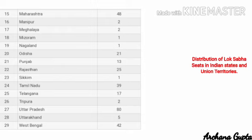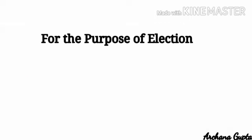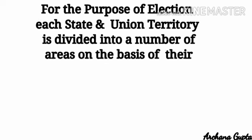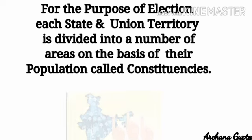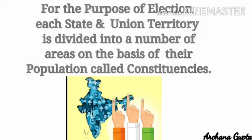The Union territory of Delhi has 7 seats in the Lok Sabha. After allotting Lok Sabha seats to each state, for the purpose of elections, each state and Union territory is divided into a number of areas called constituencies based on their population. One member is elected from each constituency. Lok Sabha has 545 seats, of which 543 are elected by direct voting, meaning there are 543 parliamentary constituencies in India.